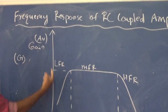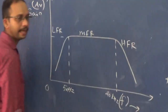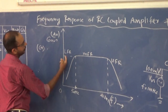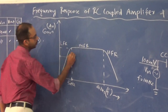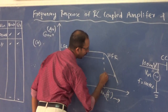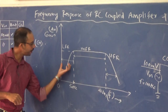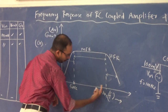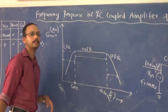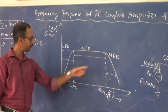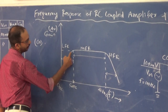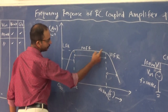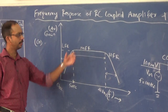Gain is plotted on the y-axis and frequency on the x-axis, and we can see three regions. The low frequency region is from 0 Hz to 50 Hz, the mid frequency region is from 50 Hz to 20 kHz, and the high frequency region is above 20 kHz. From the graph we can see that during the low frequency range the gain is less, during the high frequency region the gain is also less, and in the mid frequency region the gain is maximum and constant.